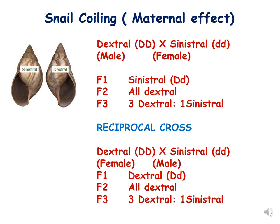Dextral is dominant over sinistral. In the first cross, when dextral (male) is crossed with sinistral (female), the F1 are all sinistral and F2 are all dextral. In F3 we obtain a ratio of three dextral to one sinistral.